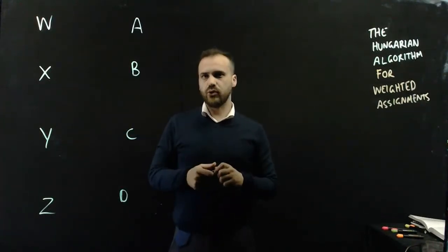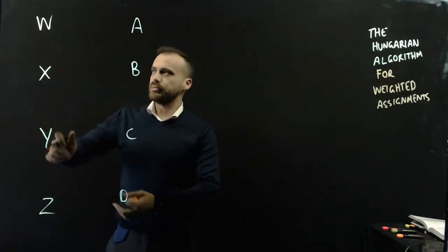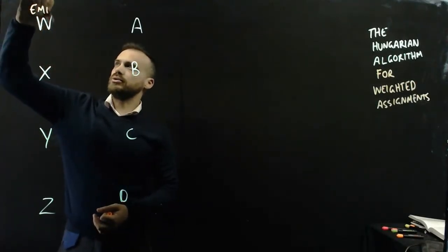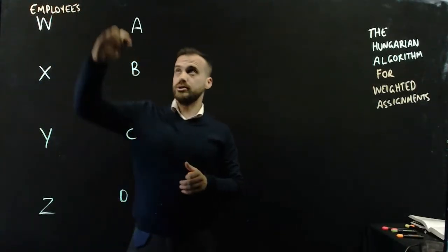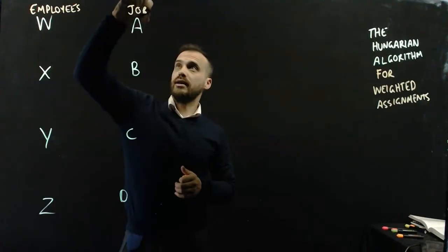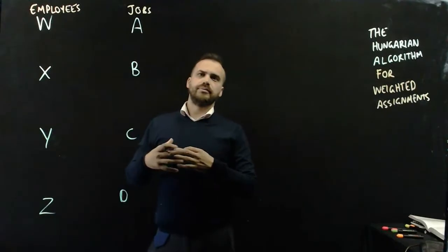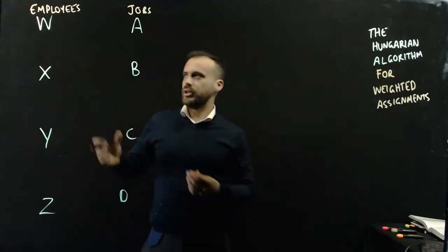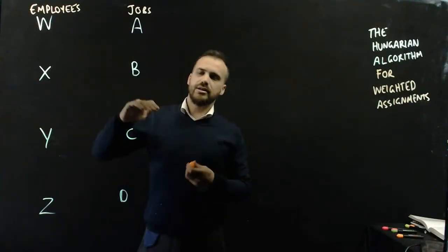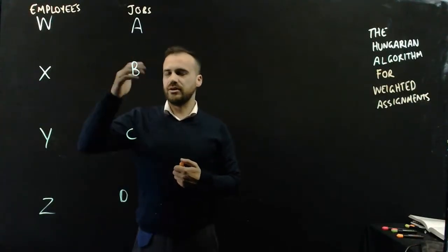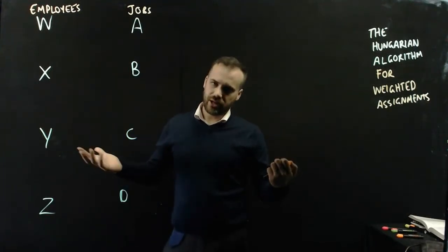So the Hungarian algorithm for weighted assignments. Imagine you had four employees: W, X, Y, and Z. And let's say you had four different jobs to do — A, B, C, and D. Maybe you're like a construction crew with four people, and you need to do some bricklaying, mixing of cement, leveling something off, and some other job.